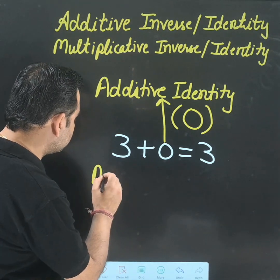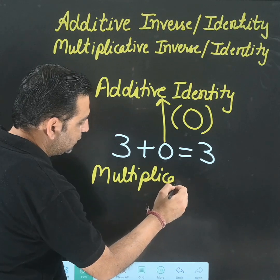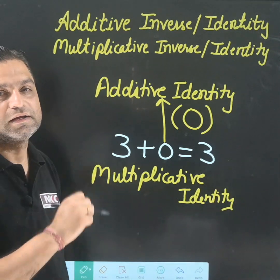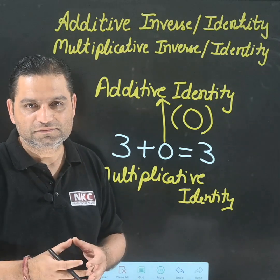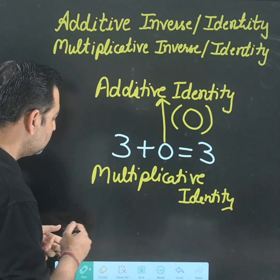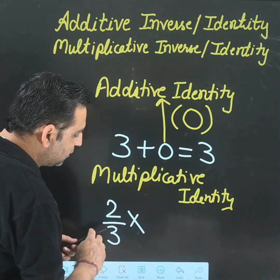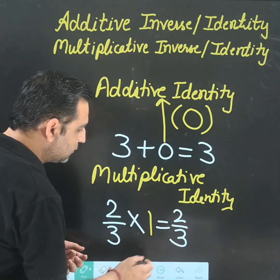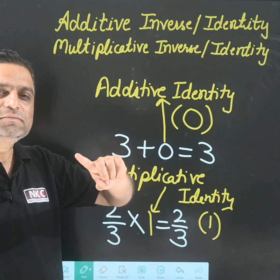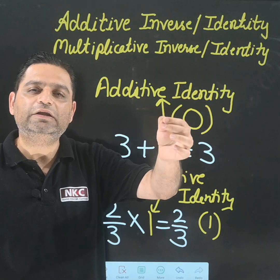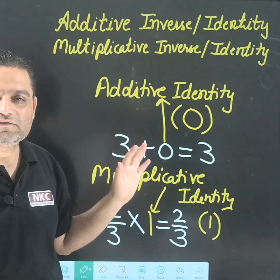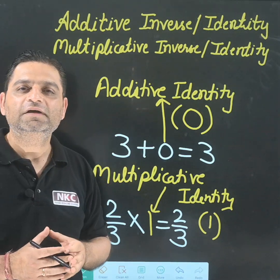Now, multiplicative identity: with which number should I multiply so that my identity does not change? The answer is 1. You multiply any number by 1 and there is no change — for example, 2 over 3 multiplied by 1 is still 2 over 3. So 1 is the multiplicative identity. To summarize: inverse depends on the value given, whereas additive identity always remains 0 and multiplicative identity always remains 1. I hope the difference between all of them is clear. Thank you so much for watching!